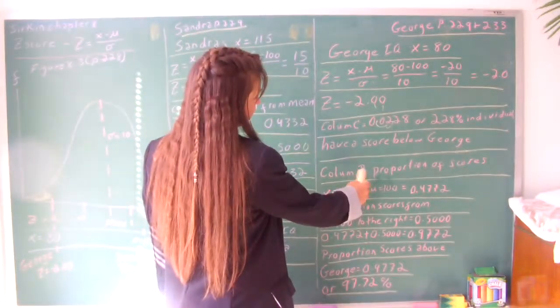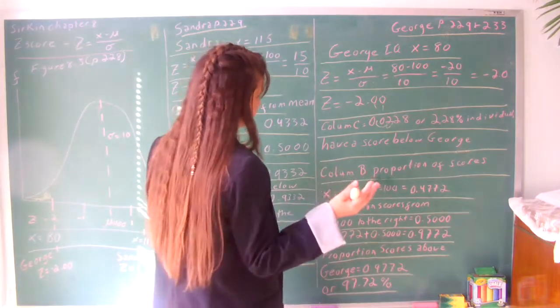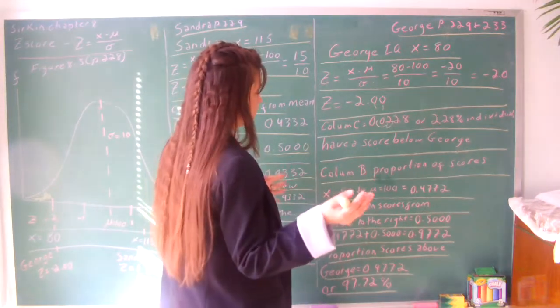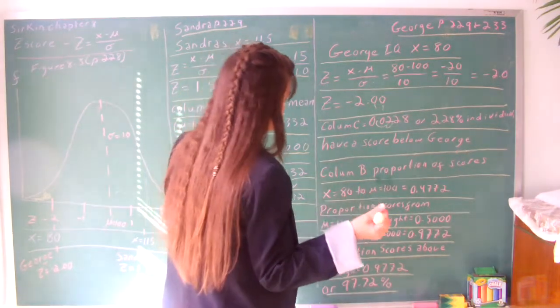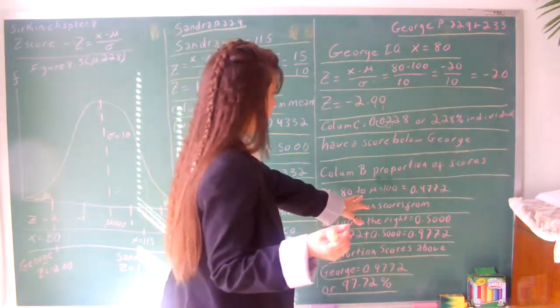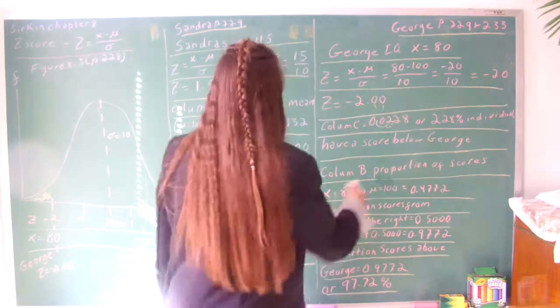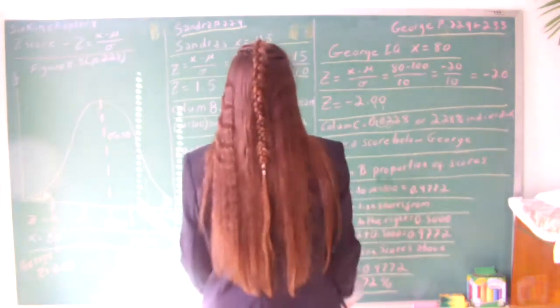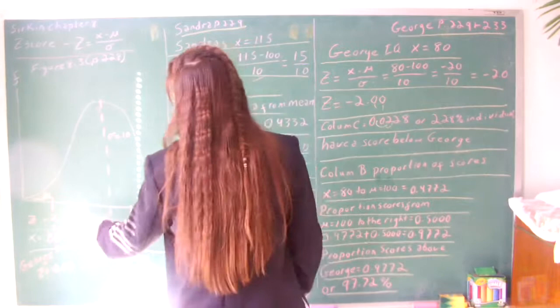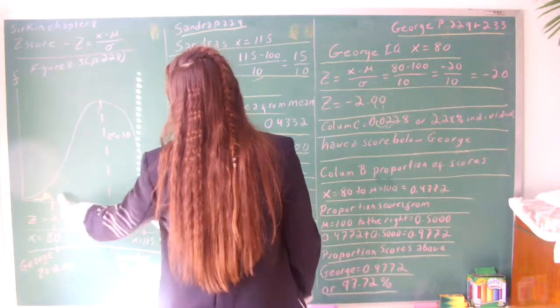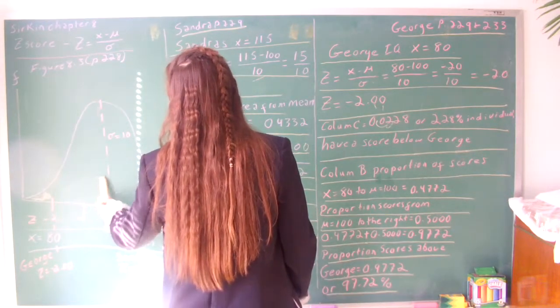And then column B for the next part we're looking at column B. This is the proportion of scores from x equals 80 to the population mean of 100. So that is how many scores would be from the 80 to there.